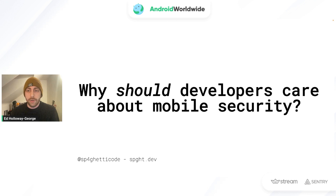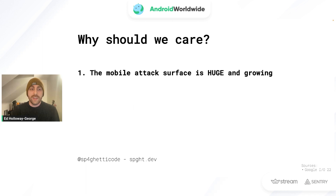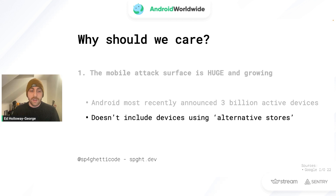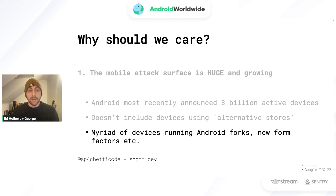Let's talk about why developers should care about mobile security. The mobile attack surface is huge and growing. Android recently announced there are 3 billion active devices — about 40% of the world's population. This doesn't include alternative stores, Amazon devices, or some Asian carriers like Huawei. The Android ecosystem is expanding with new form factors such as tablets, cars, and foldables, which means mobile security is something we really need to be concerned about.